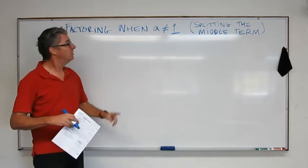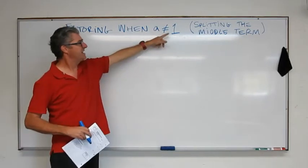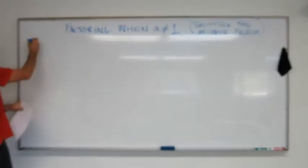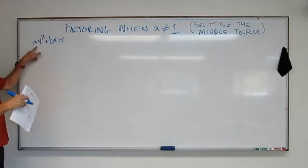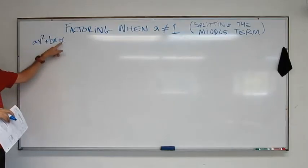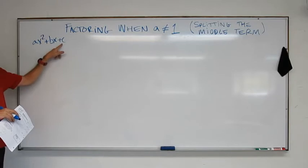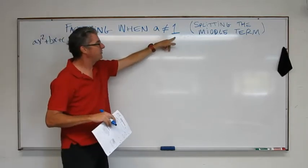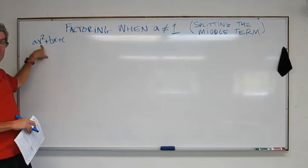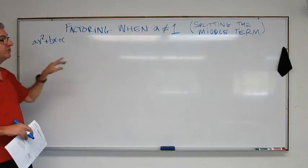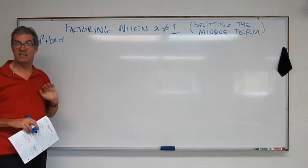Okay, quick review. What does this mean, a not equal to 1? Remember how we have our standard format for these expressions, ax squared plus bx plus c. Okay, so this a not equal to 1 is talking about this term in front of the x squared. So if you have some number out here, you might have to use this technique.